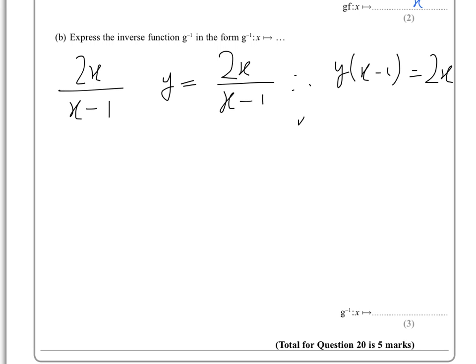So we have to multiply that out, and we'll get yx, or actually, strictly speaking, this correctly should be xy minus y equals 2x.